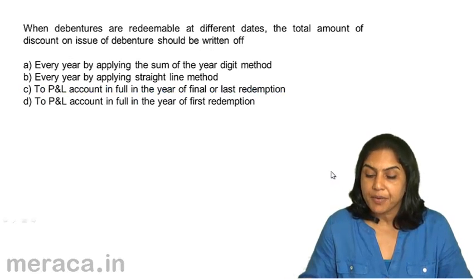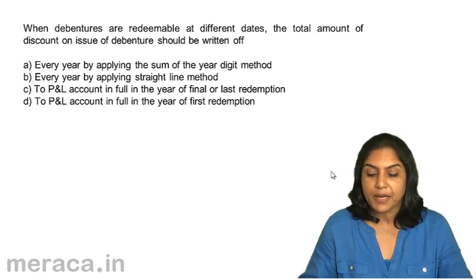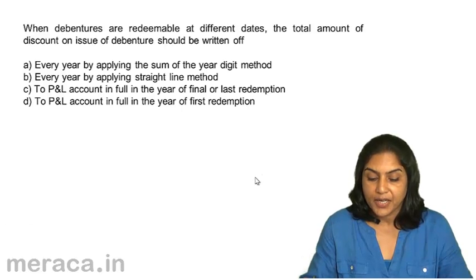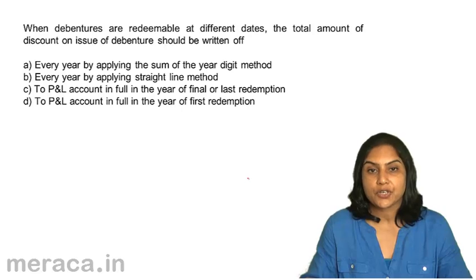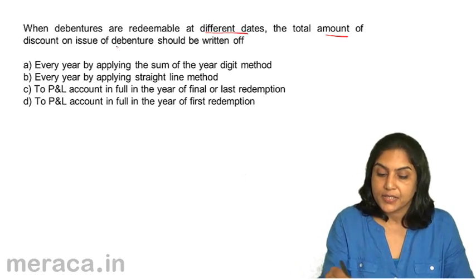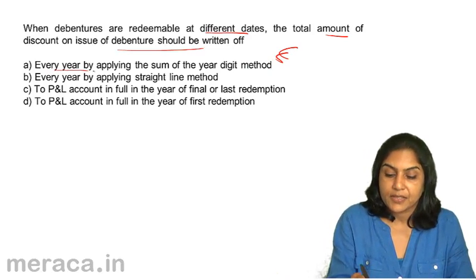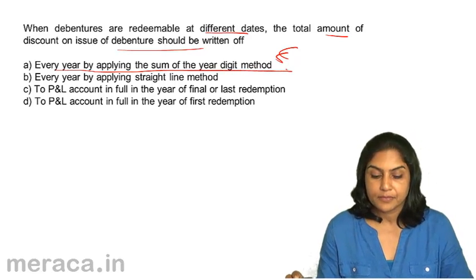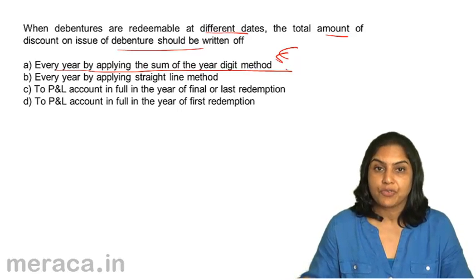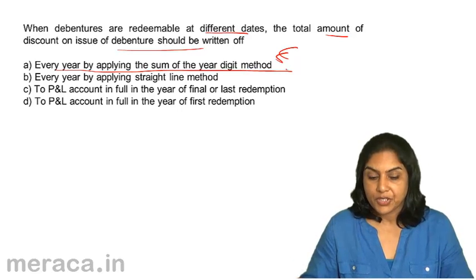Next, when debentures are redeemable at different dates, the total amount of discount on issue of debentures should be written off: A. Every year by applying the sum of the year digits method, B. Every year by applying the straight line method, C. To profit and loss account in full in the year of final or last redemption, D. To profit and loss account in full in the year of first redemption. When there are different dates, the discount is written off by applying the sum of the year digits method — a reducing balance method written off in the ratio of the benefit received from the debentures. Correct answer is A.